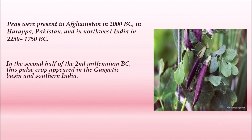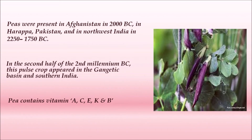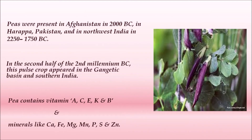This pulse crop appeared not only in the Gangetic basin — where the Ganga river flows — but also in south India. Pea contains vitamins A, C, E, K, and B, and also minerals like calcium, iron, magnesium, manganese, phosphorus, sulfur, and zinc.